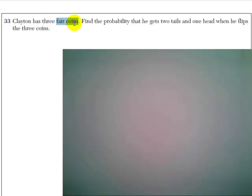So fair coins, that means they have an equal chance of landing heads or tails. And we want to know how likely is it that he gets two tails and one head. And we need to remember that there's more than one way that this can happen.